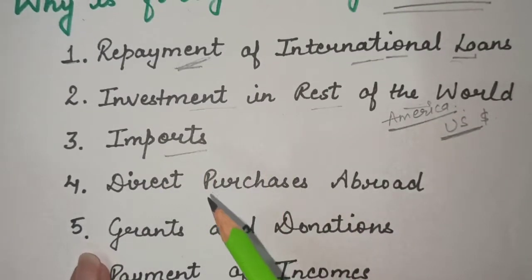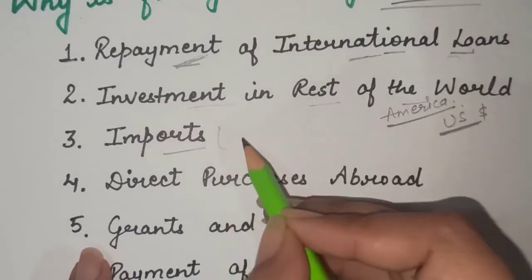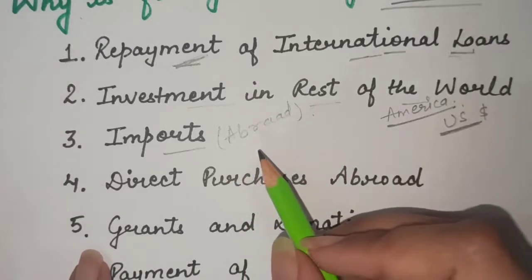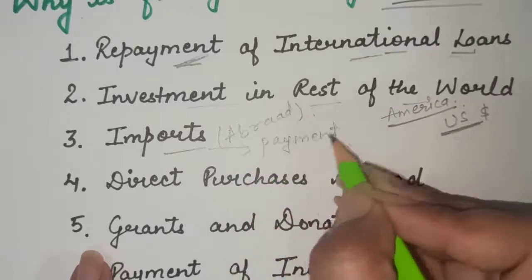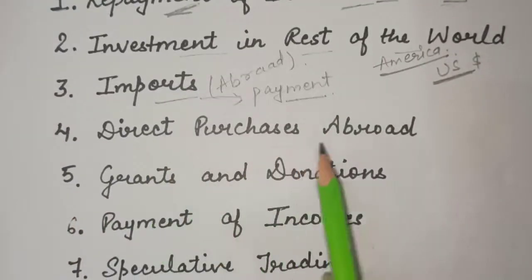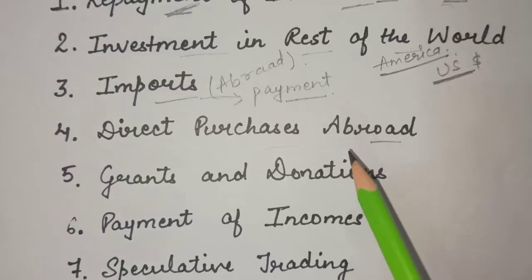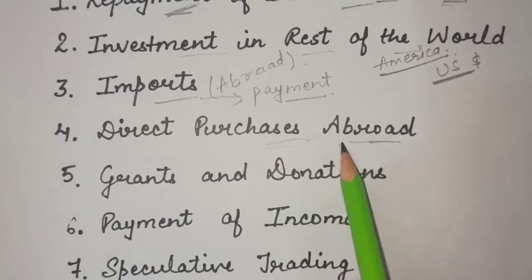Next is imports. We import goods such as TVs and phones, and we take banking and insurance services from the rest of the world. When we import such goods and services, we require foreign exchange for payments. Next is direct purchases abroad — when people from our country visit other countries, suppose for tourism, you need foreign currency for purchases there. When we go abroad for studies, job, or any other purpose, we need foreign currency, and this creates demand for foreign currency.